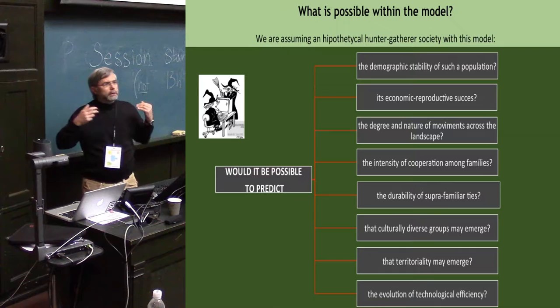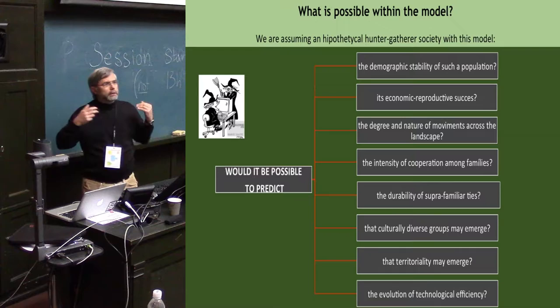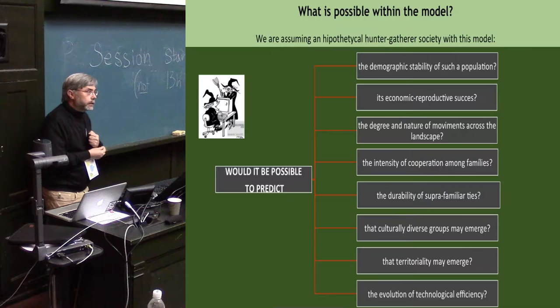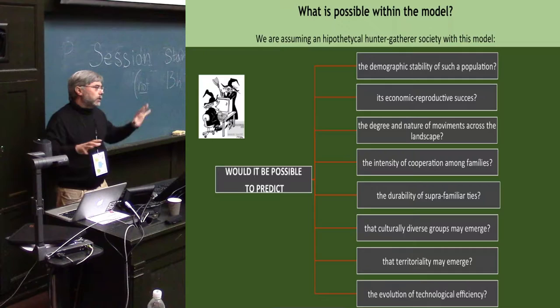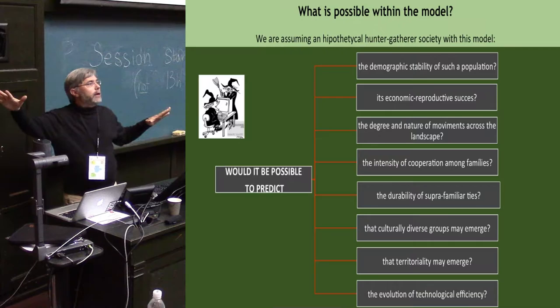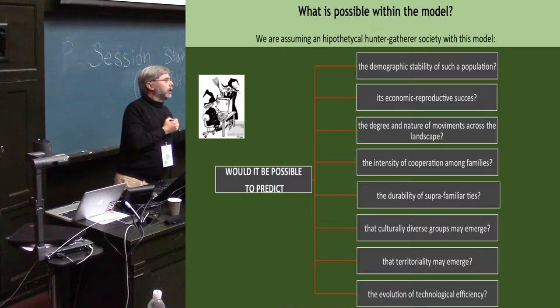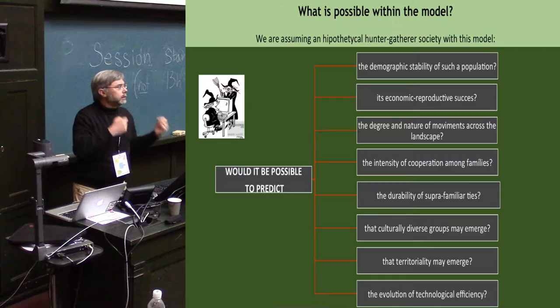We are specifically looking for whether territoriality can emerge among hunter-gatherers where there are no geographical barriers, starting with homogeneous populations. In which conditions may these forms of territoriality appear? And the evolution of technological efficiency - you can increase cooperation if people share the same technology, but increasing efficiency increases differences and decreases cooperation possibilities.